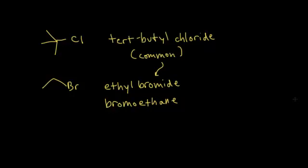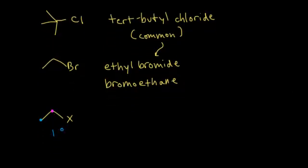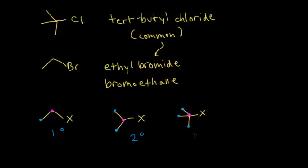The last thing we need to do is talk about classification of alkyl halides — the same concept as for alcohols. You look at how many carbons the carbon bearing the halogen is attached to. Attached to one other carbon makes it a primary alkyl halide. Attached to two carbons makes it a secondary alkyl halide. Attached to three carbons makes it a tertiary alkyl halide.